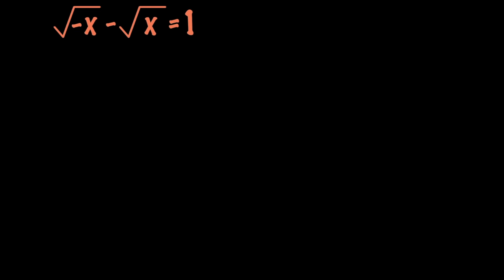First of all, let's go ahead and talk about the domain of this equation. We have two square roots, therefore we will have two restrictions. The first square root indicates that negative x should be non-negative, which means that x should be less than or equal to 0. However, the second one indicates that x should be greater than or equal to 0. Since we want these two to work at the same time, we need to find the intersection of these two intervals, and that is x equals 0.